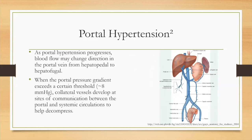As hypertension progresses, flow which generally goes toward the liver — what we call hepatopetal — can eventually, because of the pressure, reverse direction, which we call hepatofugal, meaning away from the liver. When the pressure gradient exceeds eight millimeters of mercury, collateral vessels start to develop at different sites of communication between the portal system and systemic circulation — your body's natural way to try to decompress itself by directing flow away from the liver back into systemic circulation.